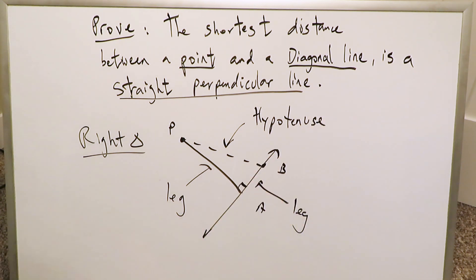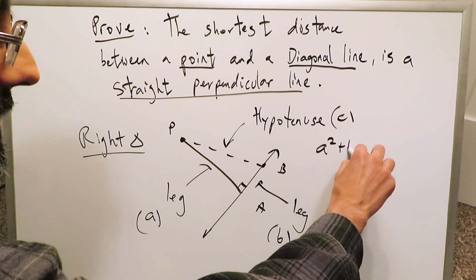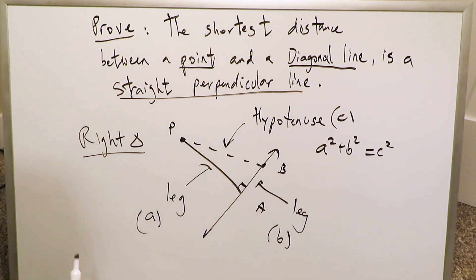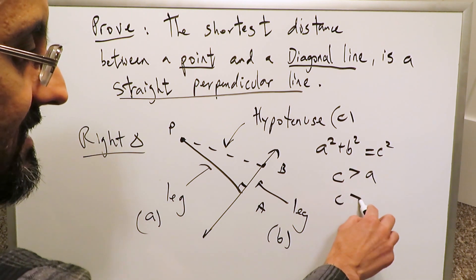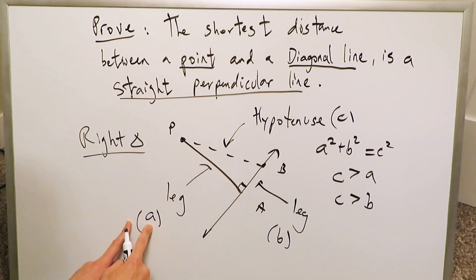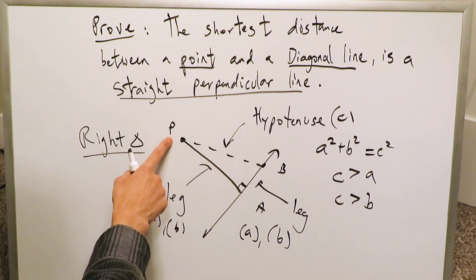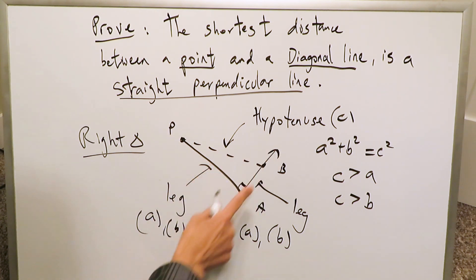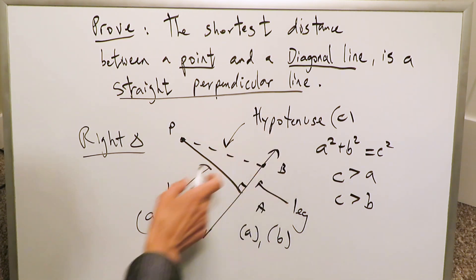And what do we know about the hypotenuse in contrast to the legs of a right triangle? If you call this side A, this side B, and this side C, we know there's a specific theorem — the Pythagorean theorem: A squared plus B squared equals C squared. In all instances for a right triangle, the dimension C is always larger than A and also larger than B. If the straight perpendicular line is considered a leg — you can call it A or B — you certainly cannot call it the hypotenuse.